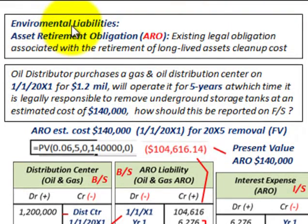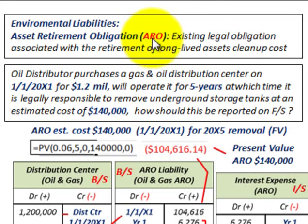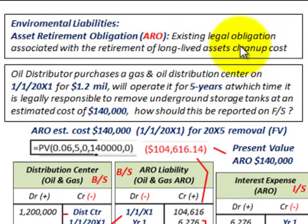What we're going to be looking at here is environmental liabilities, referred to as Asset Retirement Obligations, or AROs. There are existing legal obligations associated with the retirement of long-lived assets — the cleanup costs for these long-lived assets. We're going to be going through an example and how we'd account for these in our financial statement reporting.